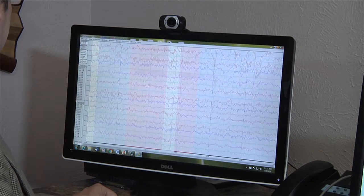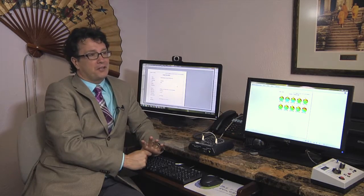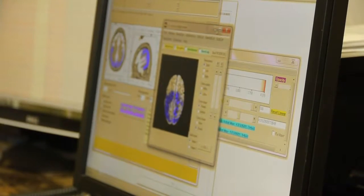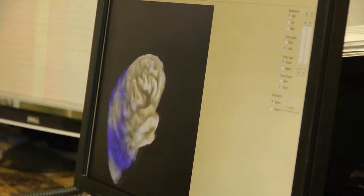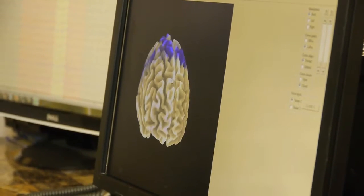If someone has ADD or ADHD, they might have too much theta going on in the front of their brain. We can then develop a protocol to lower the theta. So we can take the brain and then we can actually twirl it around and we can see which parts of the brain have been affected.